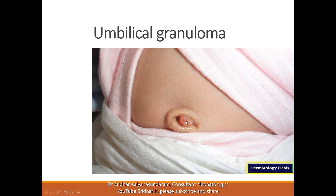Umbilical granuloma is a far commoner problem where you get a little bit of granulation tissue remaining at the base. The majority of the time, if you keep it clean and dry, it shrinks with time. Normally, if it is not oozing, you don't need to do anything. If there is a definite ooze, we can apply some fucidin or antibiotic cream. And if it persists even after two to three weeks of age, we can consider treatment.